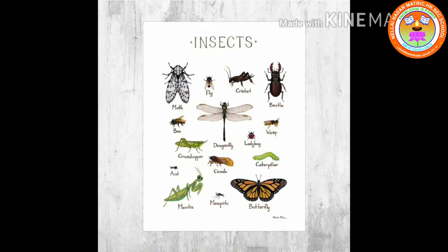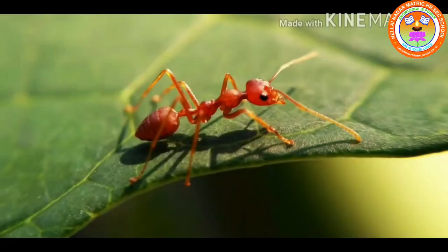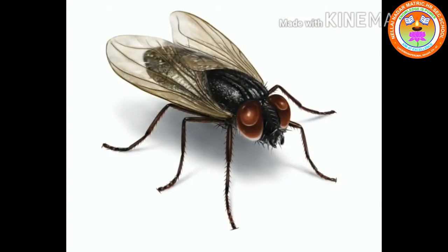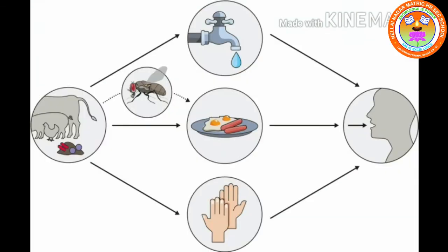They are ant. You can see ant searching for food. It is a good worker. House fly. You can see it everywhere. It spreads disease.